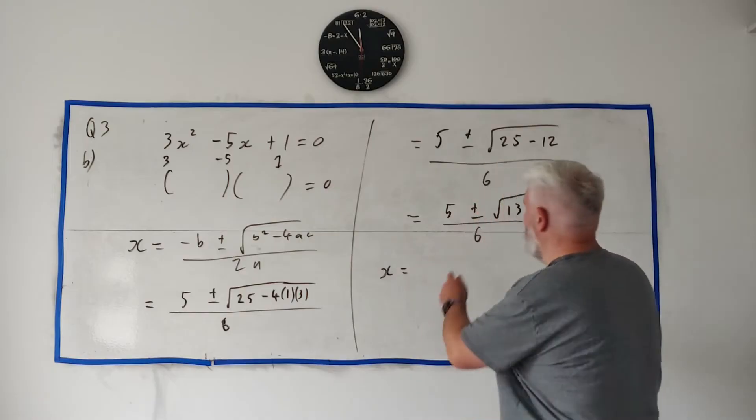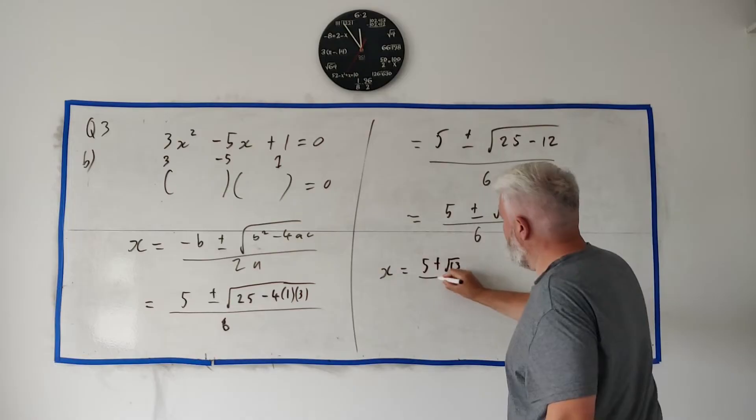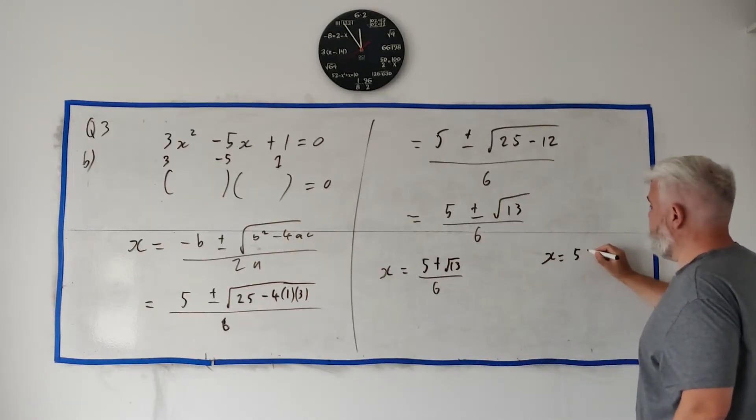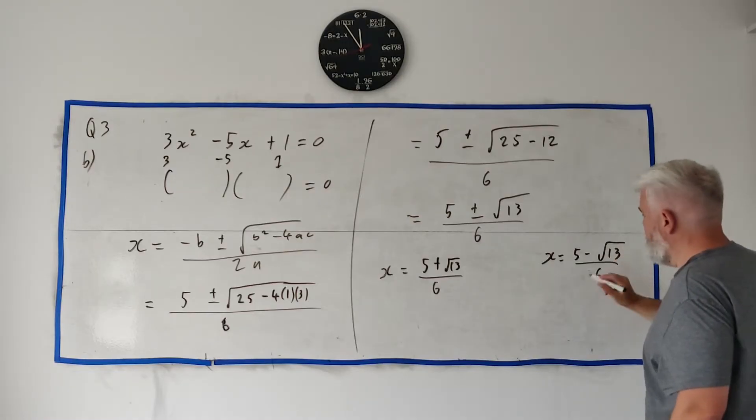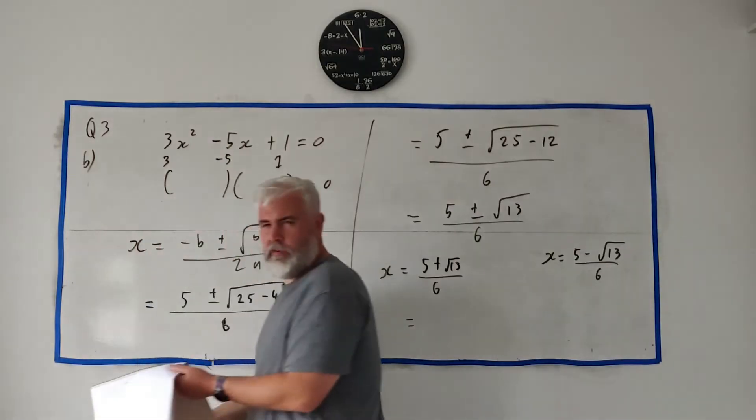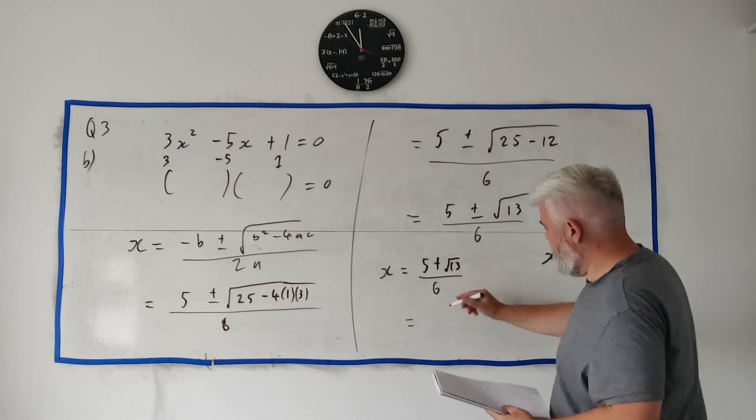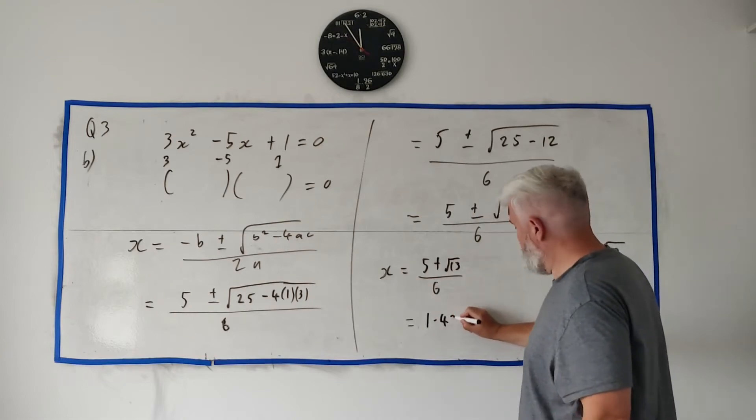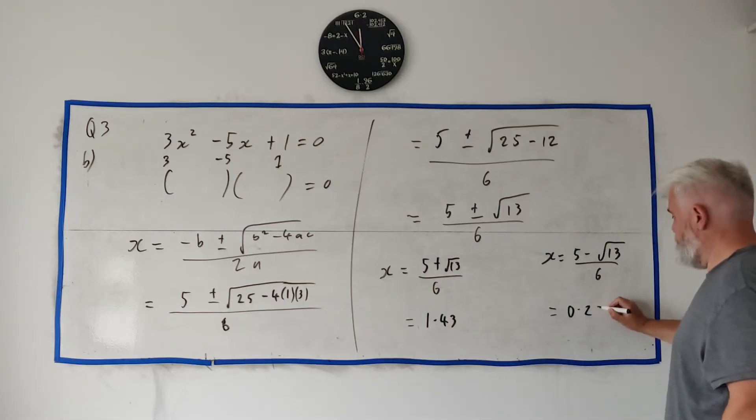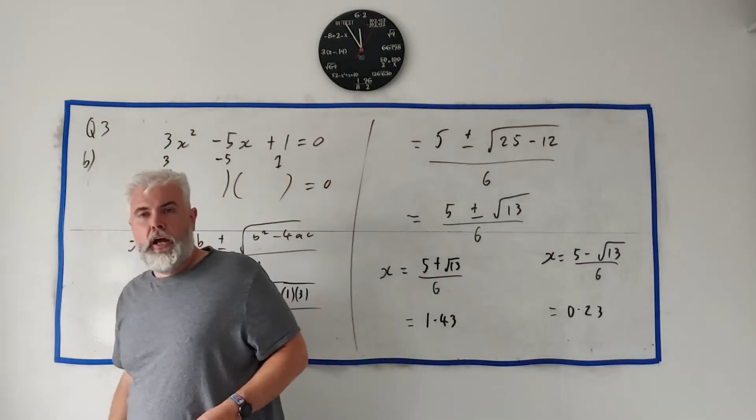So we have two answers here. I know it looks like one, but it's plus or minus. There's two answers. 5 plus square root of 13 over 6. Put that in a calculator. X is equal 5 minus square root of 13 over 6. Put that in a calculator. And you get two answers. This will come out as 1.43. And if you put this in a calculator, that will equal 0.23. I've rounded off to two decimal places in both.